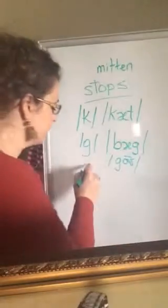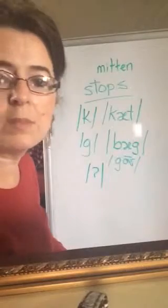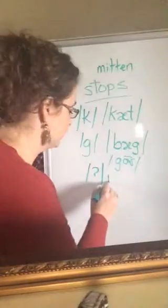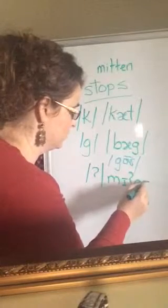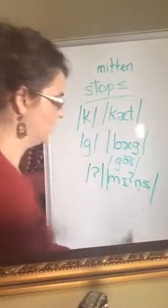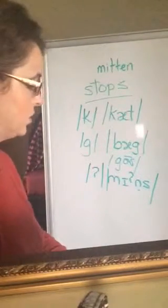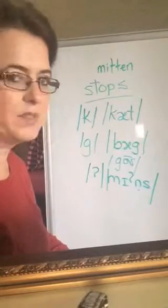So the glottal stop looks like that question mark without the dot in the bottom. So if we were to transcribe the word mittens, it would look something like that, because we're not saying mittens. Does that help clear up some of that?